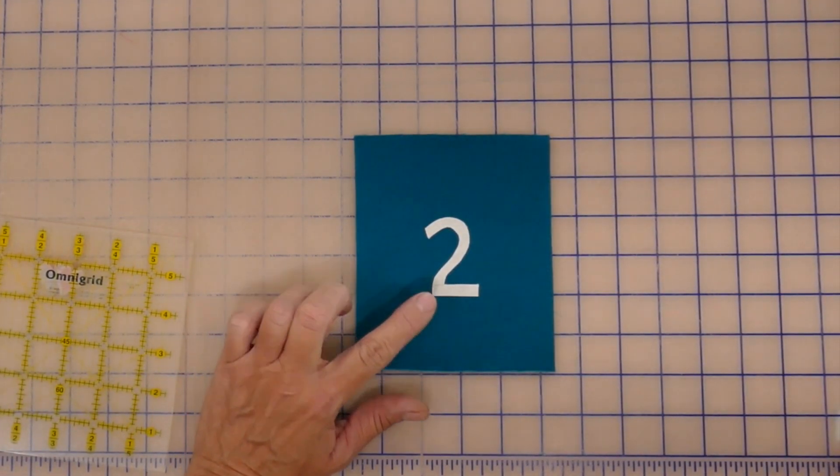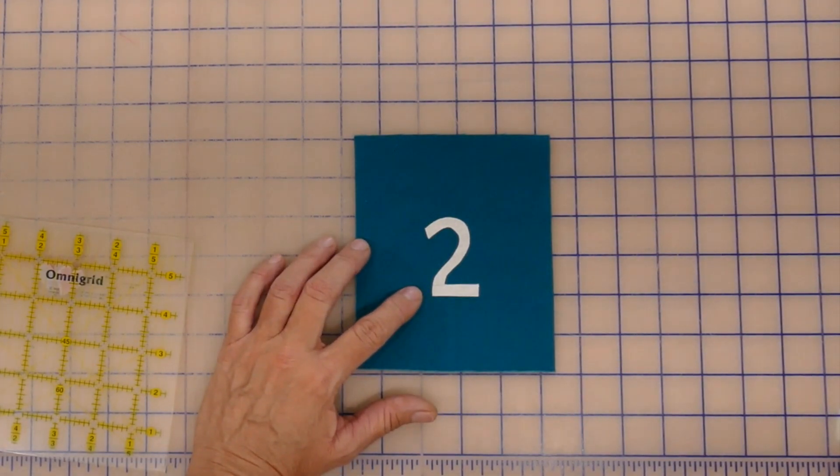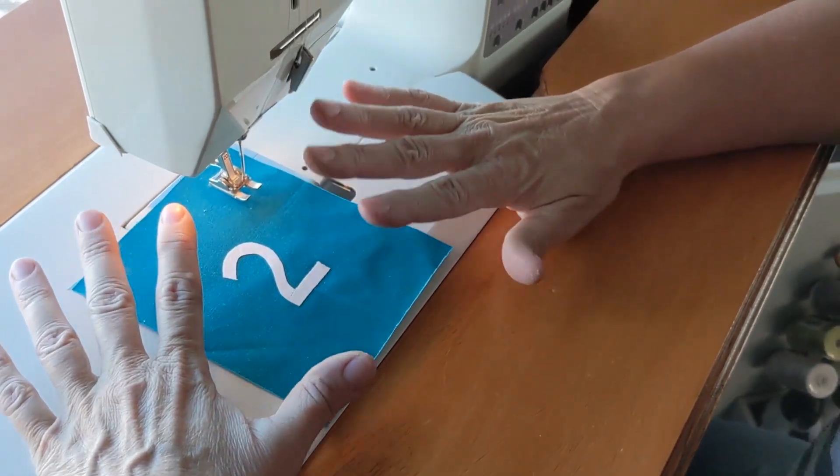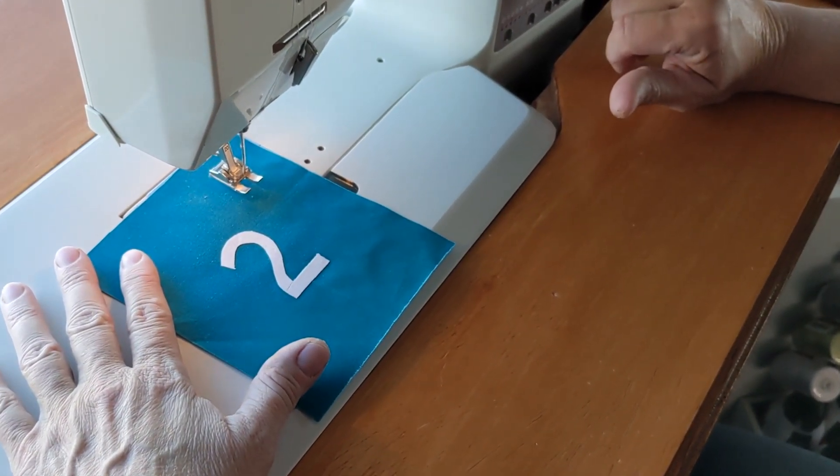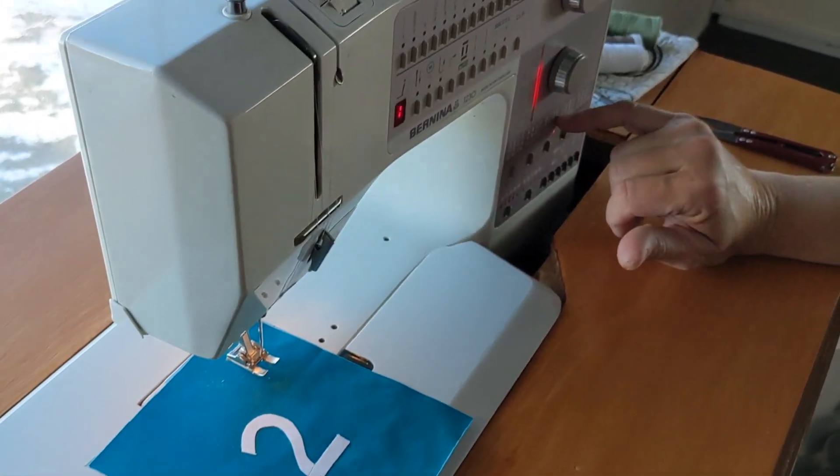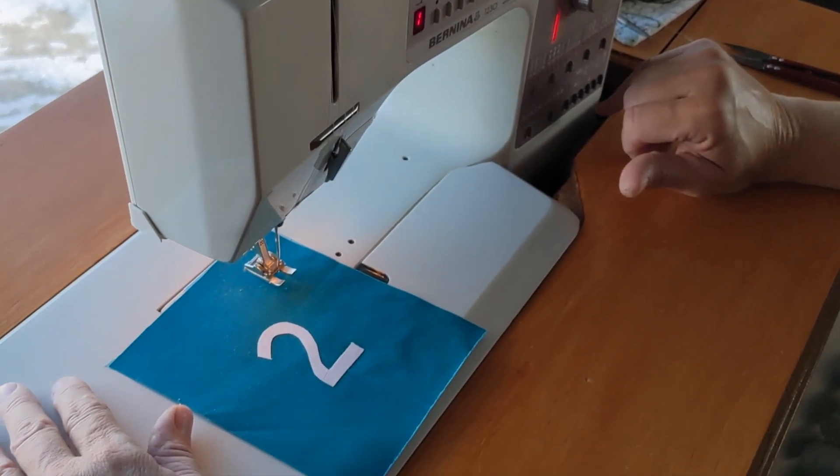Now I'm going to take this to the iron, press it in place, and I will meet you at the sewing machine. Okay, so when you set up your machine here for a buttonhole stitch, I'm going to use a buttonhole stitch. For me on my machine, that's stitch number 26, but you'll set yours to whatever you need to do.